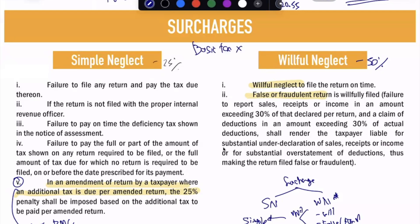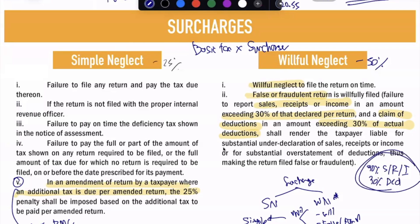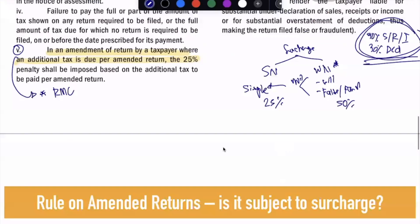The basis for surcharge is basic tax multiplied by the surcharge rate. When can we say a return is false or fraudulent? It is prima facie evidence if your sales receipts or income exceeds 30% of that declared on the return, or if the claimed deductions exceed 30% of actual deductions. If any of these apply, it is considered willful neglect at 50%. If not, it is simple neglect at 25%. Be careful about number 5 in simple neglect — there is a new ruling on that.